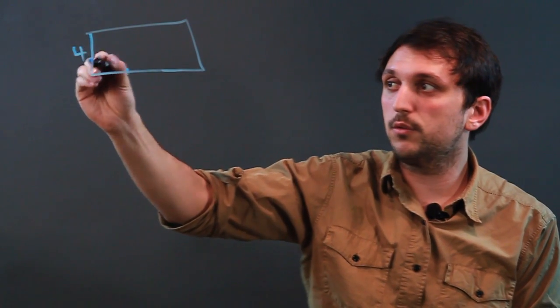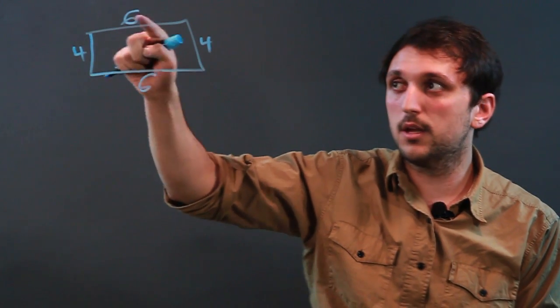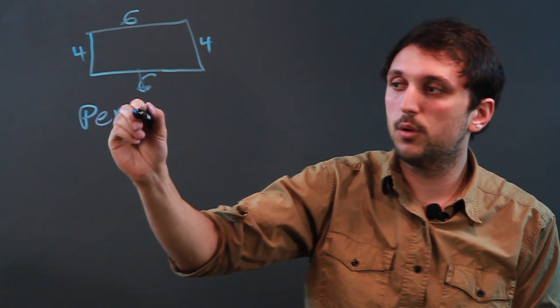So let's say these two sides are 4, and these two sides are 6. So 4 plus 4 is 8, plus 6 plus 6, which is 12, would be 20. So the perimeter would be 20.